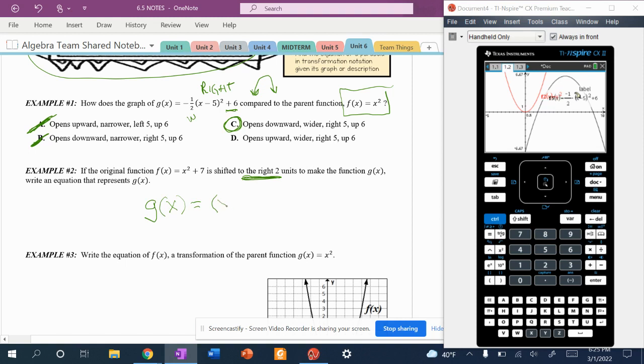And then if it's shifted to the right, that means my x is going to have parentheses and it's going to be squared. All right. And if it's to the right, you know, it's going to be two. And I'm going to say it is going to be negative, right? Because if it's minus two, it's going to the right and nothing. It didn't go up or down. Nothing else happened. So I would say G(x) = (x - 2)² + 7.